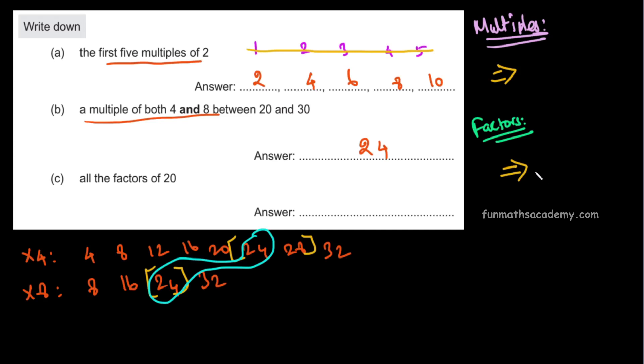If you look at 20 factors using factor pairs, you check one table: all the 20s are 20. For 2 tables, check if numbers divide 20 exactly.